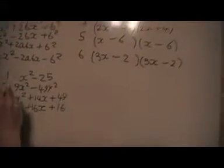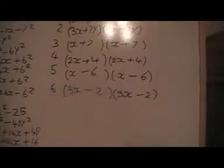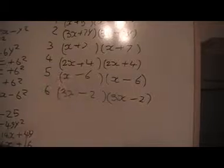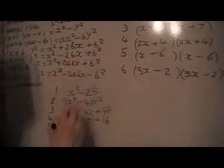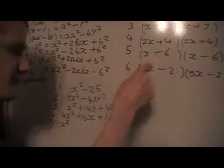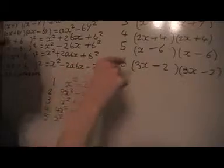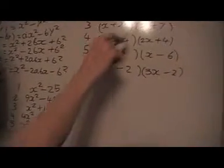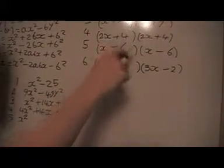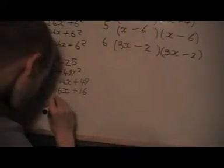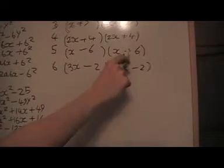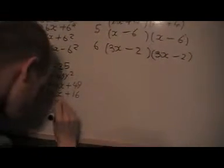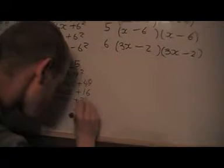Example 5 is similar to example 3 but with a minus sign. I square the first term to get x squared, using the minus version of the rule. Then I get minus 6 times x, which is minus 6x, multiplied by 2 gives minus 12x. Then I square the last term: minus 6 times minus 6 is positive 36. So the answer is x squared minus 12x plus 36.